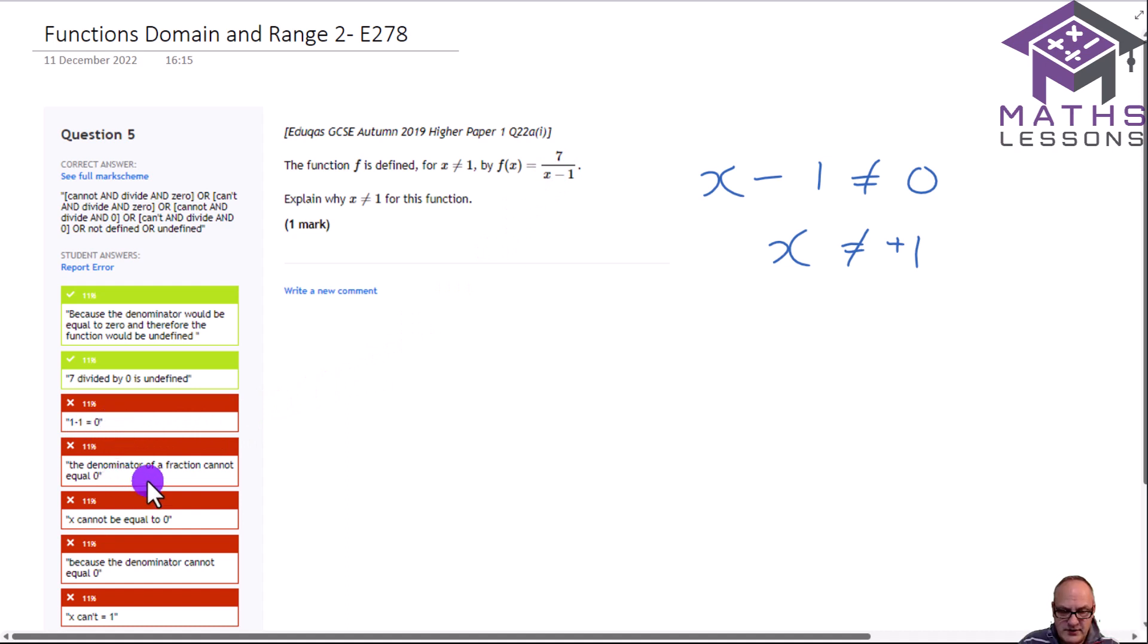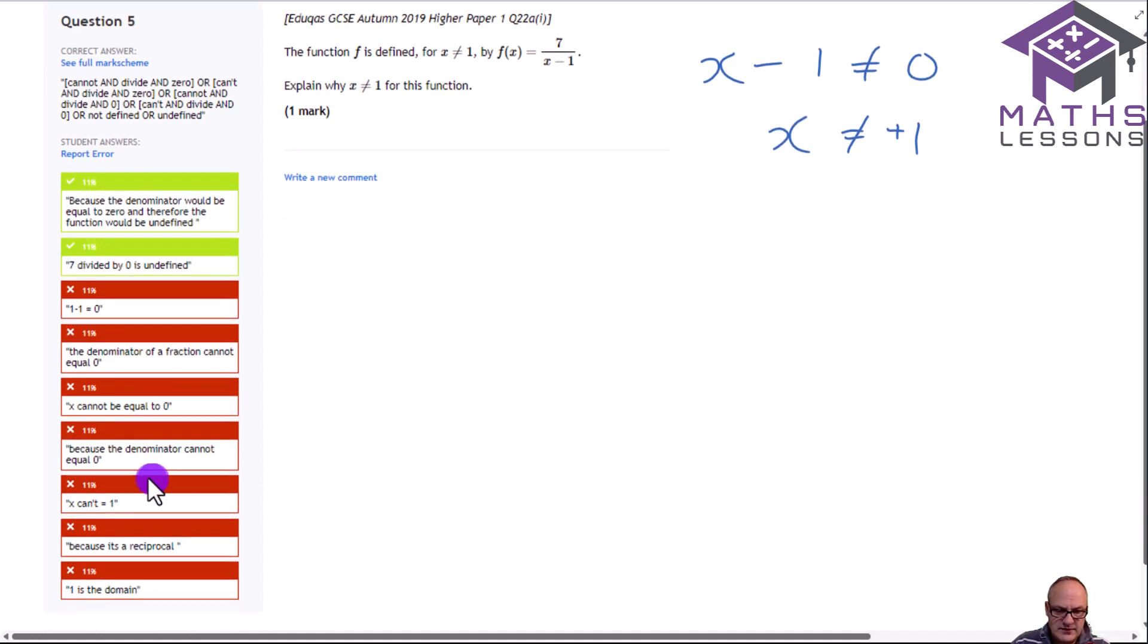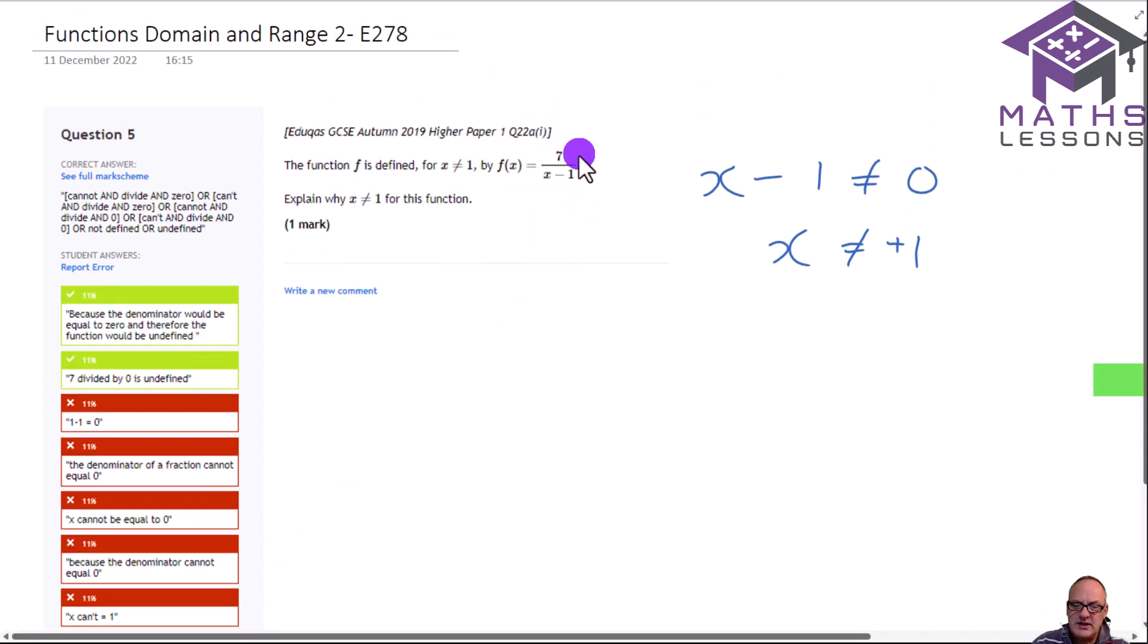Now, they've not been quite so clear. Just because 1 minus 1 equals 0, it's not really going into the reasons. Denominator of fraction cannot equal 0, well I think that's a really good reason. You'd get the marks for that in the GCSE exam, but obviously this is an AI. It's looking for the word denominator, or undefined, or 7 divided by 0. Because the denominator cannot equal 0, I think to be complete you should say if the denominator equals 0 then the function is undefined, would be a perfect answer here.